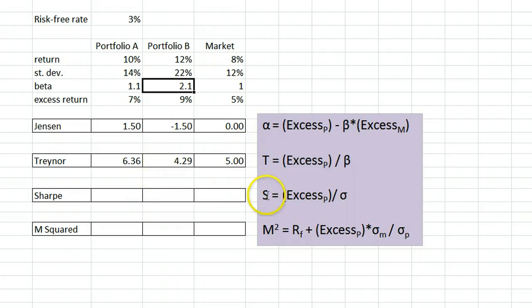The Sharpe ratio is the same as the Treynor measure, except that it uses standard deviation as the measure of risk. For portfolio A, that's 7 divided by 14. For portfolio B, it's 9 divided by 22. And for the market, it's 5 divided by 12.